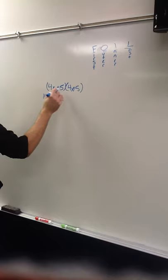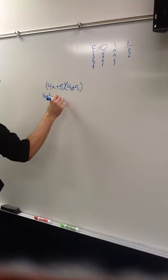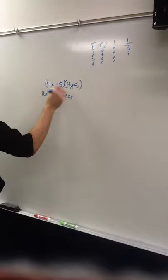Inner, you get plus, you get 5 and 4x again. So, that'd be another 20x, and then 5 times 5, for the last term, is plus 25.